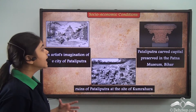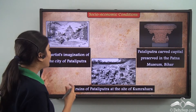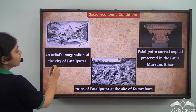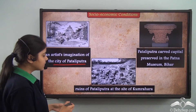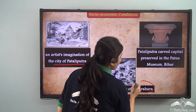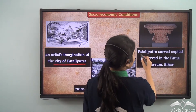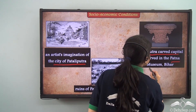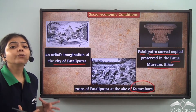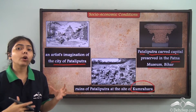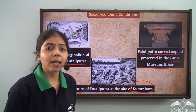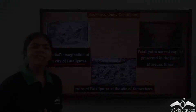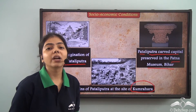Pictures show an artist's imagination of the city of Patliputra and its ruins at the site of Kumrahara. The Patliputra capital artifacts are preserved in the Patna Museum, Bihar. The main crafts flourishing at that time were pottery and carpentry, and the presence of huge buildings also suggests that masonry was a flourishing craft.